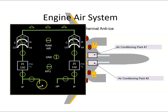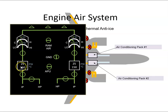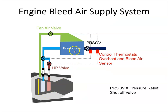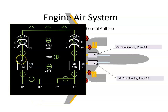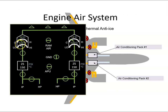On the cockpit display, we can see the high pressure valve and the intermediate pressure valve. This is how they would be displayed — high pressure valve, intermediate pressure valve. We can also see the temperature and pressure of the air coming out, the pressure relief valve, and the air conditioning pack. This shows the temperature of the air going into the air conditioning pack and the temperature coming out, going off to the various systems.